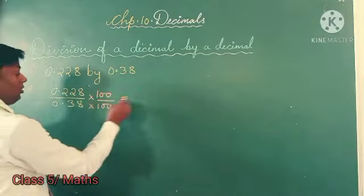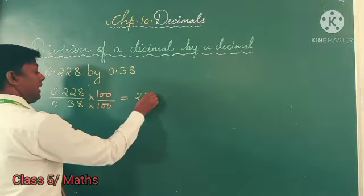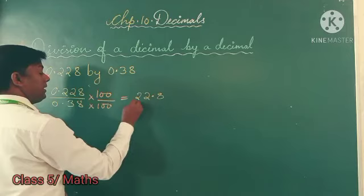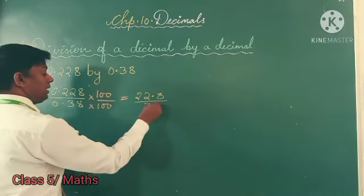There is 0.228, so it becomes 22.8. And this will make us 38. The decimal points move to give us 22.8 divided by 38.